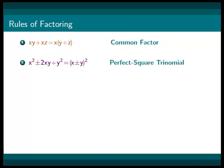x squared plus or minus 2xy plus y squared equals x plus or minus y squared, the perfect square trinomial.